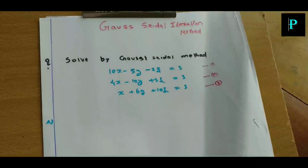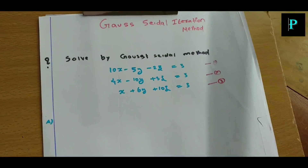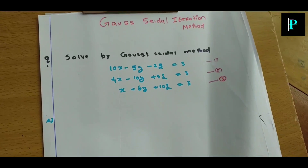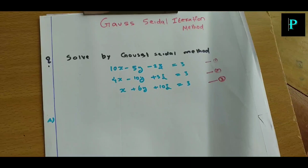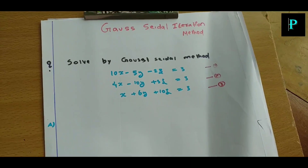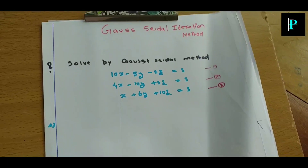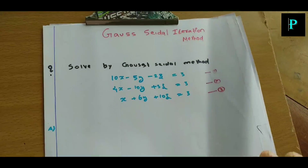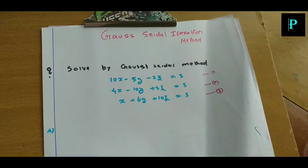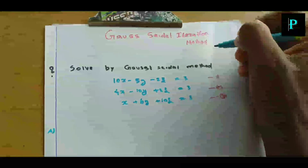We are going to take a look at X, Y, Z, and the form. That is the first method. This is the iteration method.